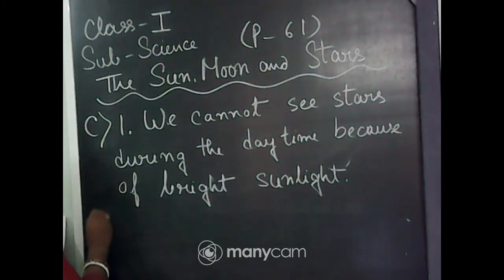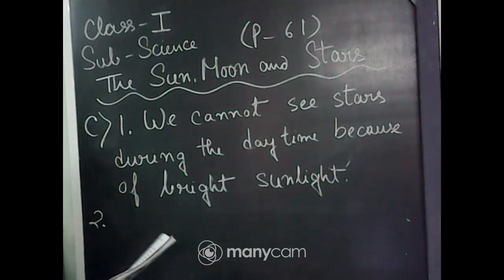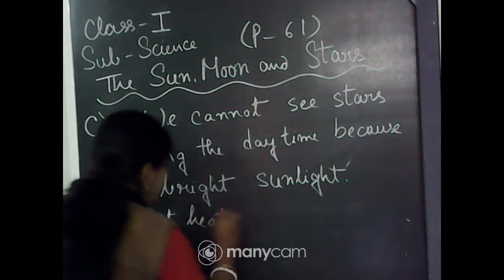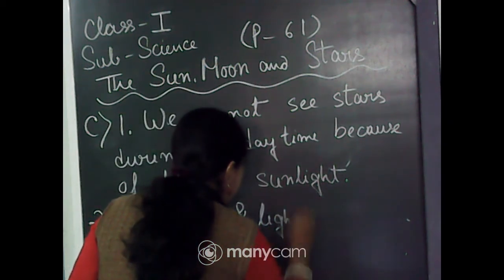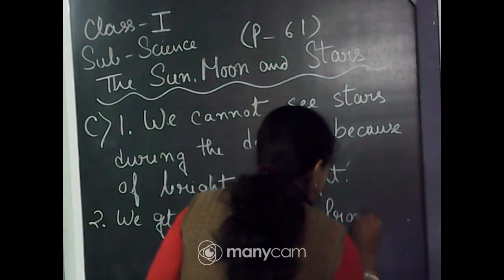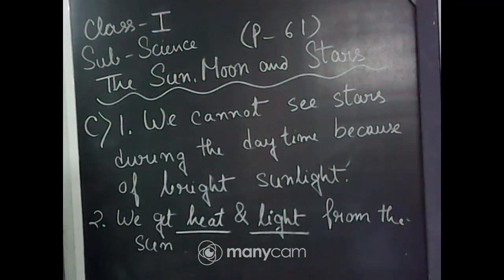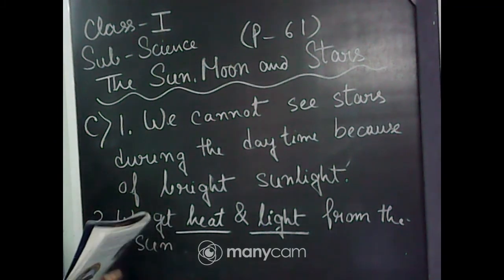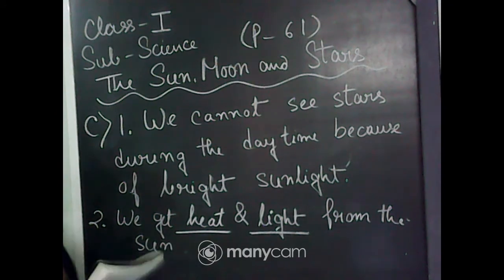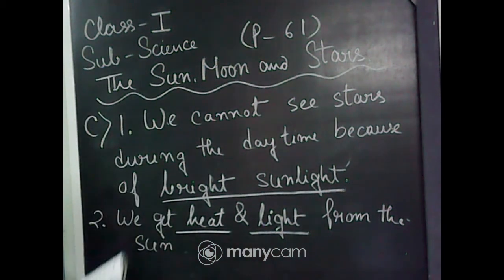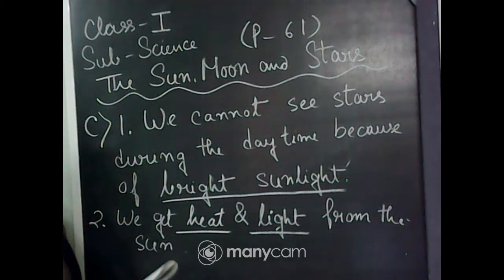Question number 2: what do we get from the sun? We all know we get heat and light from the sun. Write the answer: we get heat and light from the sun. Here are the answers for Question C. Question 1: we cannot see stars during the daytime because of bright sunlight. Question 2: we get heat and light from the sun. Remember to write in full sentences.